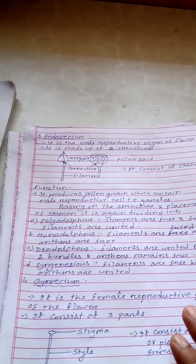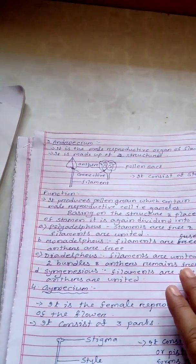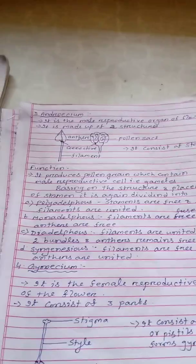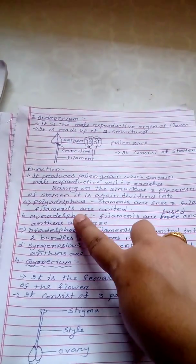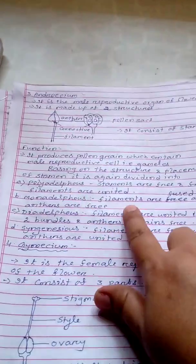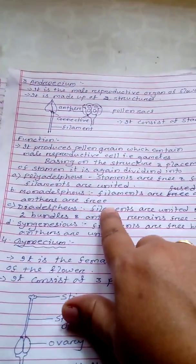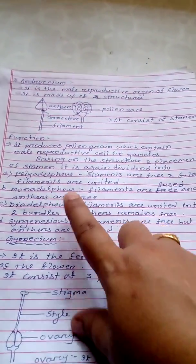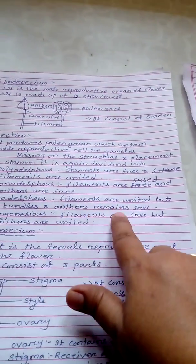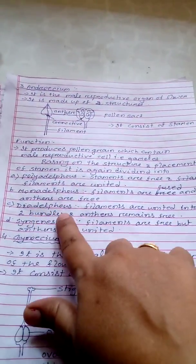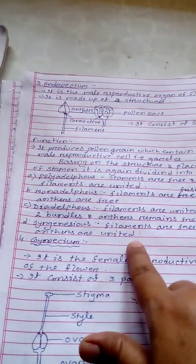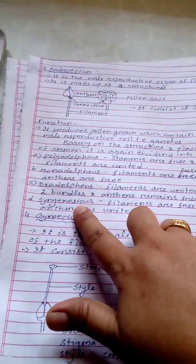There are four types of androecium based on the placement and structure of the stamen. When stamens are free and filaments are united — polyadelphous. When filaments are fused and anthers are free — monadelphous. When filaments are united into two bundles and anthers remain free — diadelphous. When filaments are free but anthers are united — syngenesious.